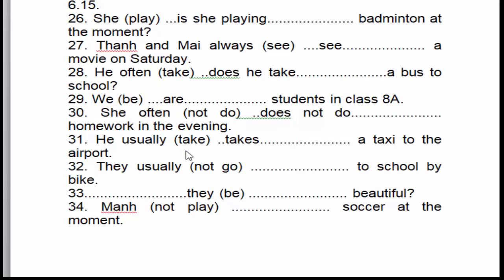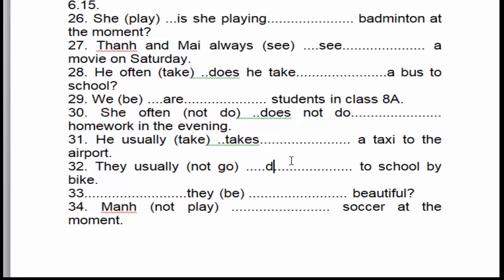Câu số 32: 'They usually don't go to school by bike.' Họ thường không đi đến trường bằng xe đạp. 'Usually' là dấu hiệu nhận biết của thì hiện tại đơn, thể phủ định. 'They' là chủ ngữ số nhiều, cho nên chúng ta sử dụng trợ động từ 'do' → 'don't'.